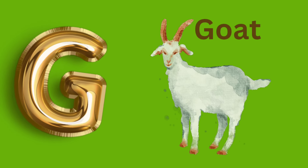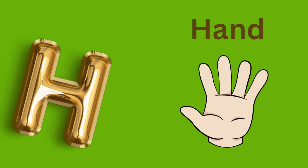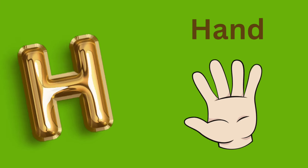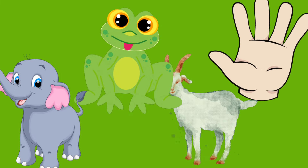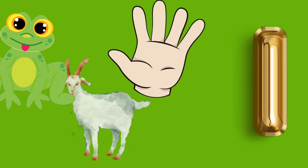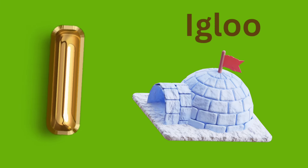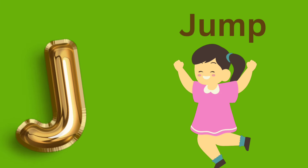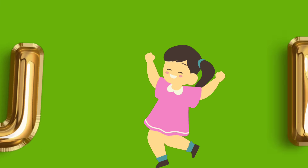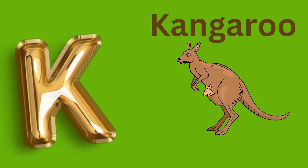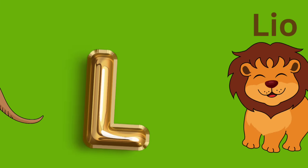I is for Igloo, I, I, igloo. J is for Jump, J, J, jump. K is for Kangaroo, K, K, kangaroo.